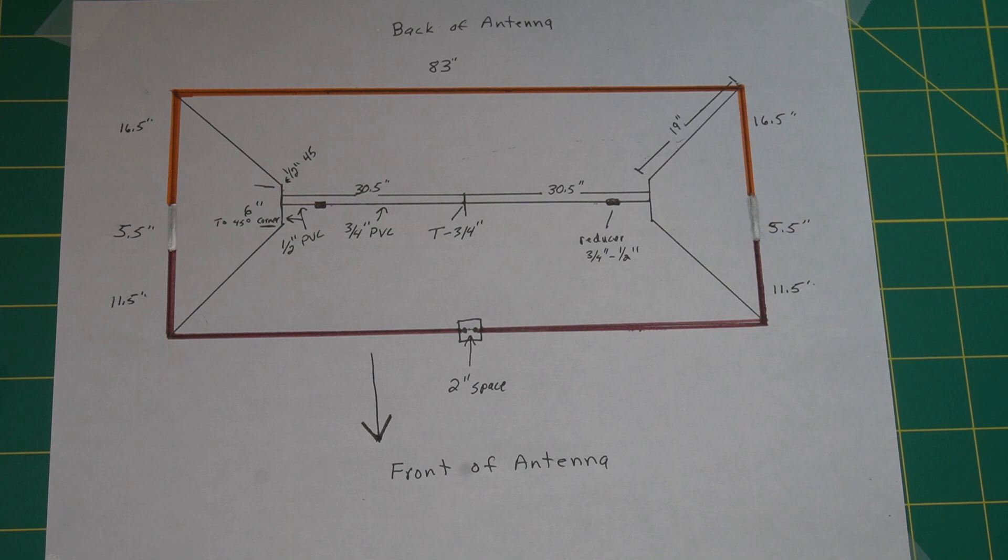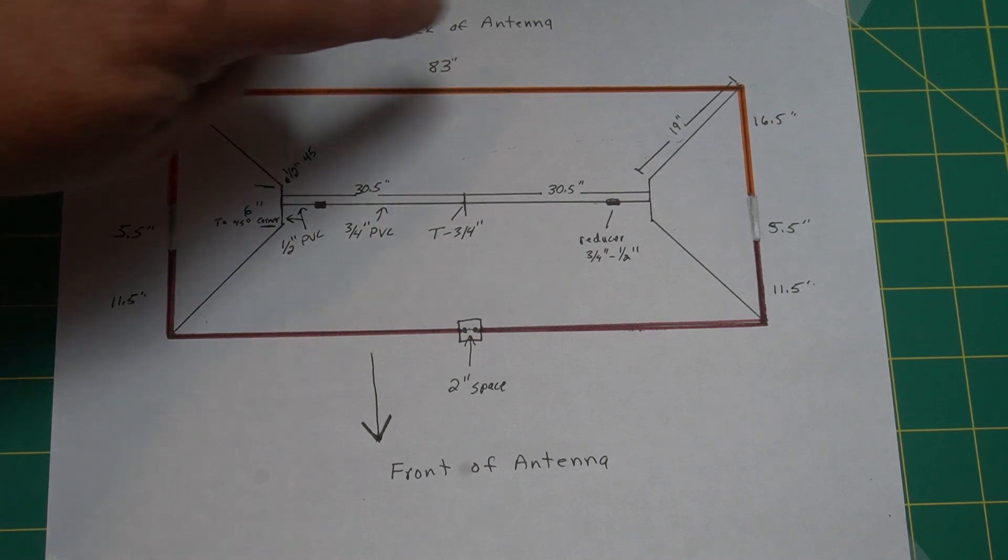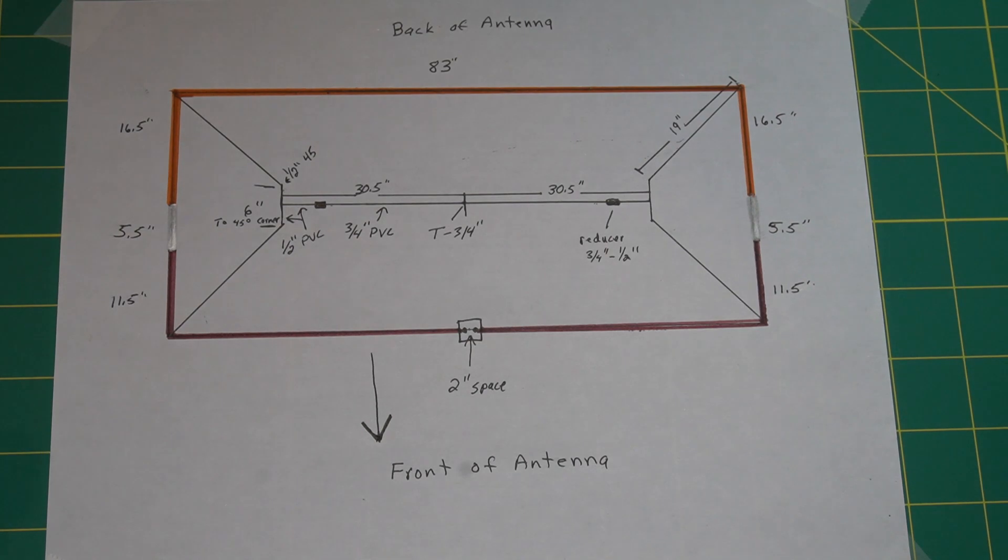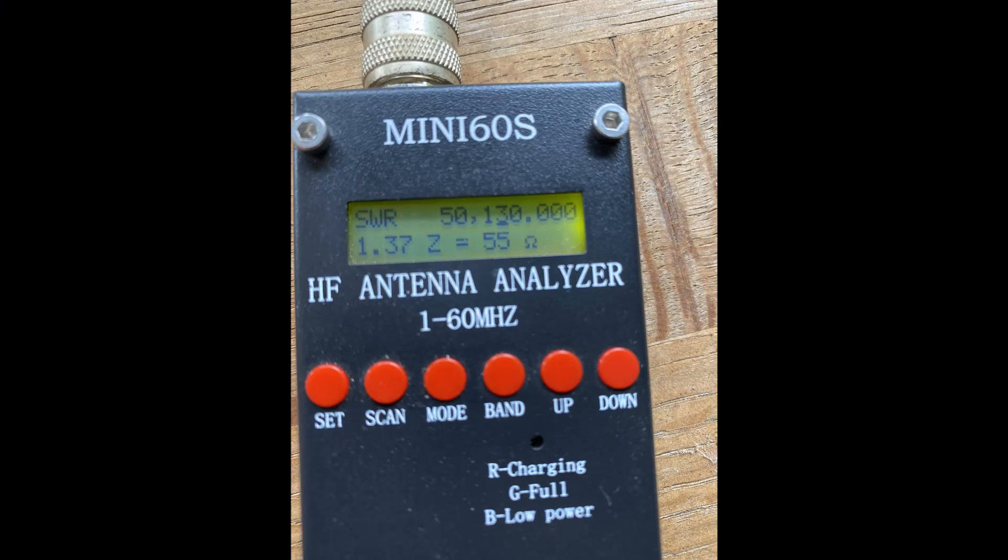And basically this 5 and a half is the critical measurement from what I understand. And what I did the other day is I actually shortened this a half an inch on both sides of the driven element a half an inch, and it brought it down because it's a little bit on the long side. But it's still plenty good. It's like 1.35 and really no reason to mess with that.